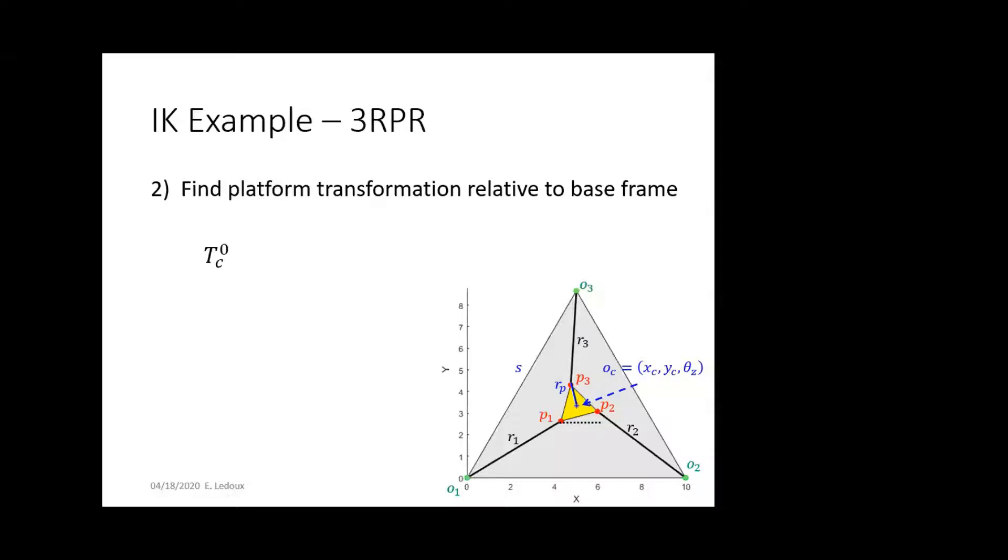Then we need to find platform transformation relative to the base frame. So, for this, it's just the rotation and the origin to get the transformation. The rotation is going to be, we know, around the z-axis, because it's a yaw. And so, we can just use cosine, sine, minus sine, cosine, put that matrix in here for the rotation, and then the translation is just going to be the origins of that point. And then it's zero because the z-component is zero. This is a planar robot.